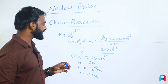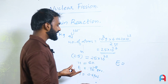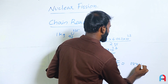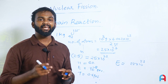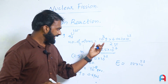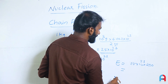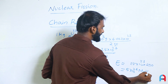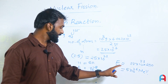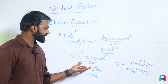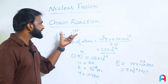Let us calculate the total energy released. All 2.5×10^23 nuclei undergo fission. If one fission releases approximately 200 mega electron volts, then the total energy released equals 2.5×10^23 × 200 MeV, which is approximately 5×10^26 MeV. This enormous amount of energy is released within just 0.6 microseconds — that is the chain reaction process.